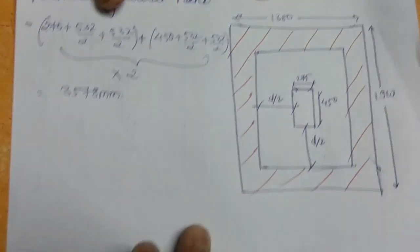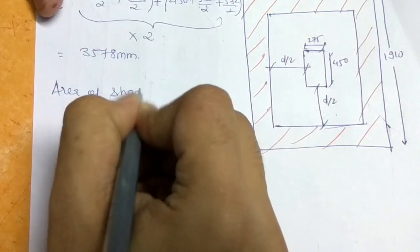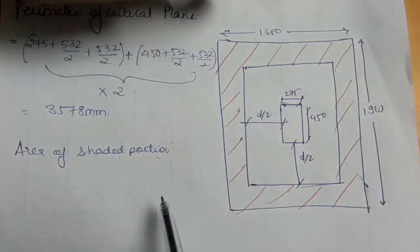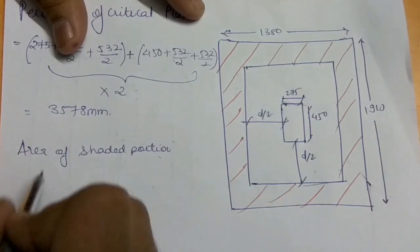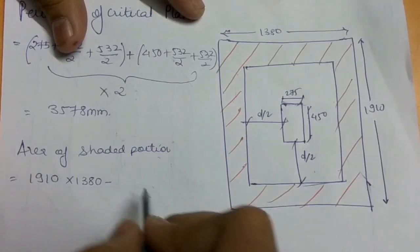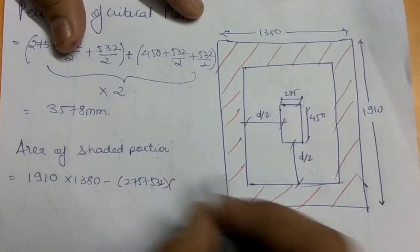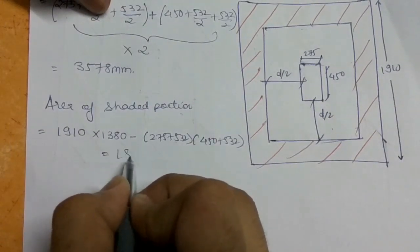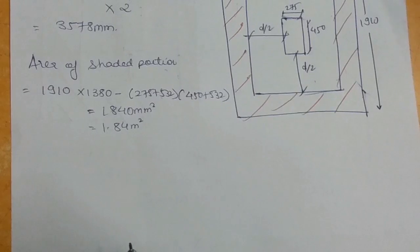The perimeter of the critical plane is 3578 mm. To get the area of the shaded portion, calculate the area of the entire footing and deduct the unhatched area: 1910 × 1380 minus (275 + 532) × (450 + 532), which gives 1.84 m².